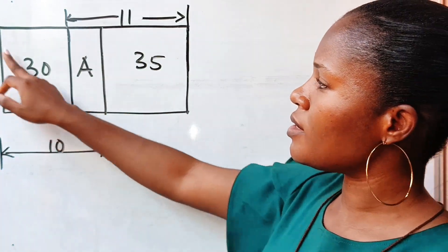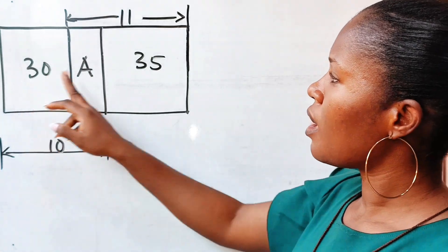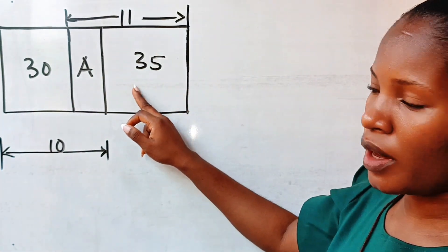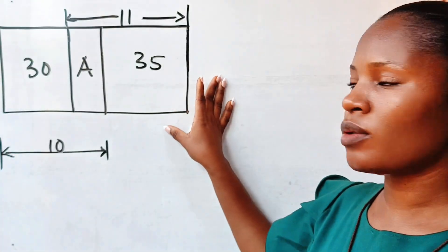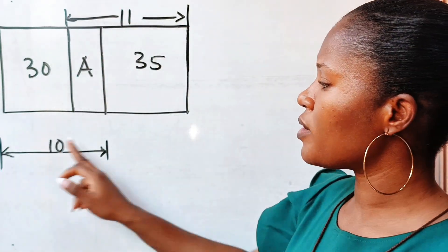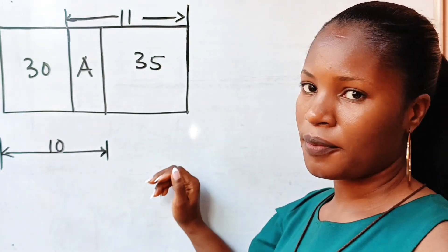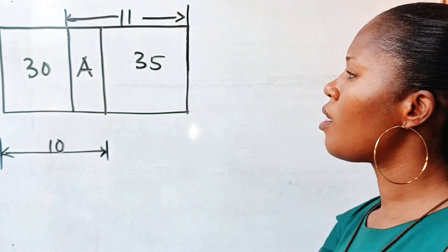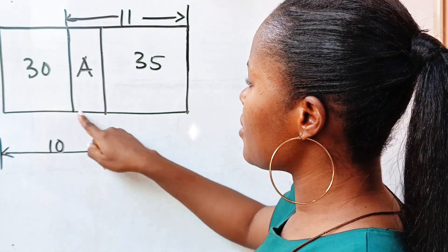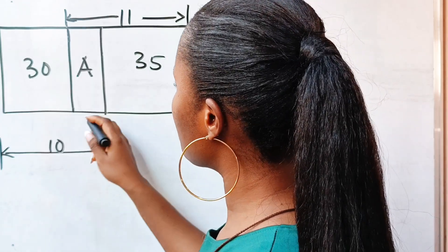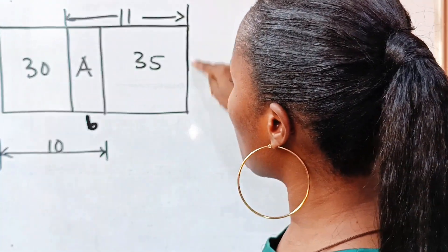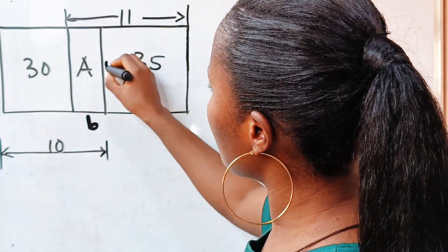30 is the area of this side, and 35 is the area of this side. This is not drawn to scale. From here to here is 11 and from here to here is 10. Let the length of this place be b, and we've already named the height h.